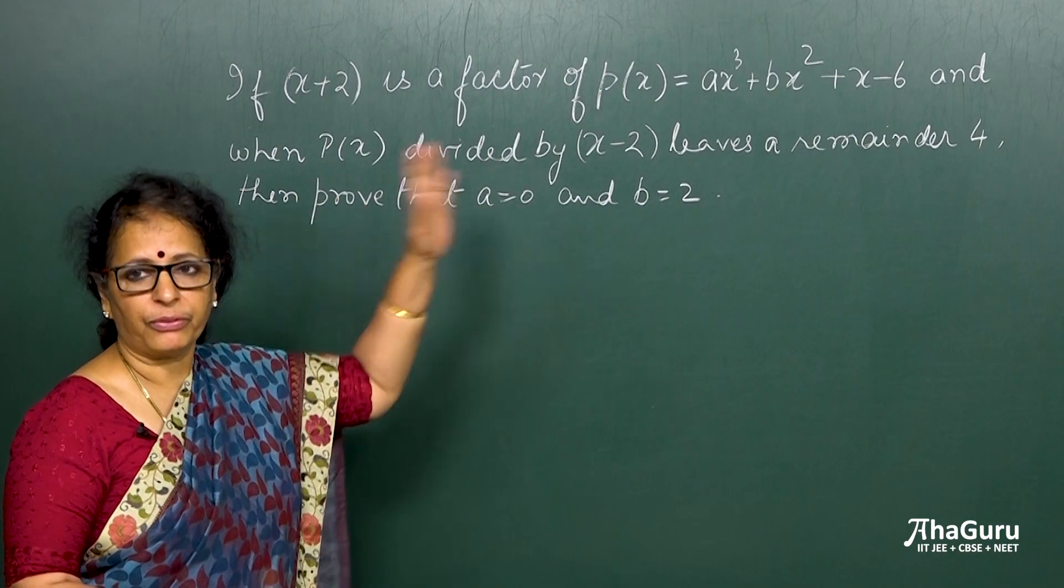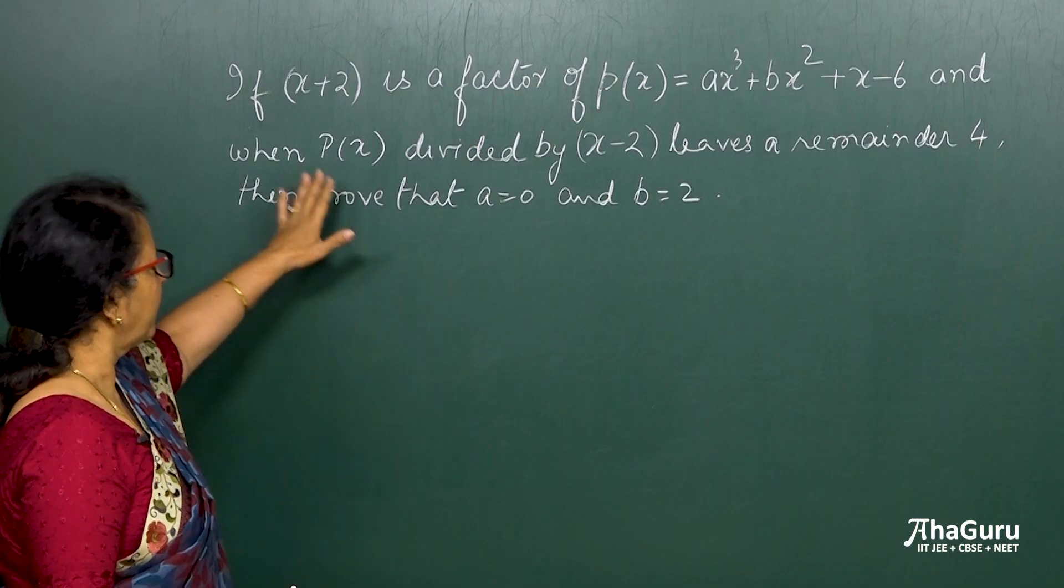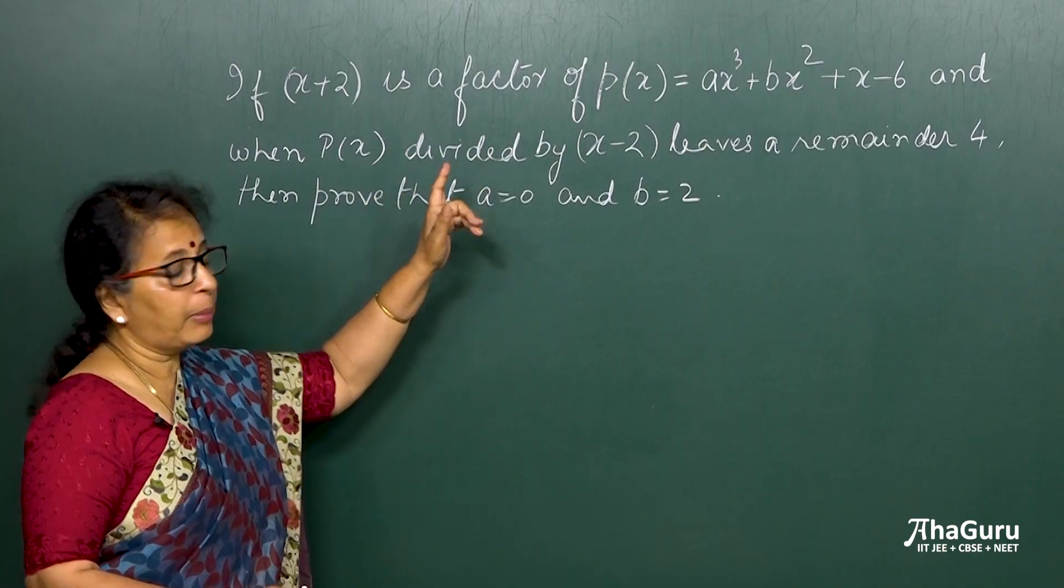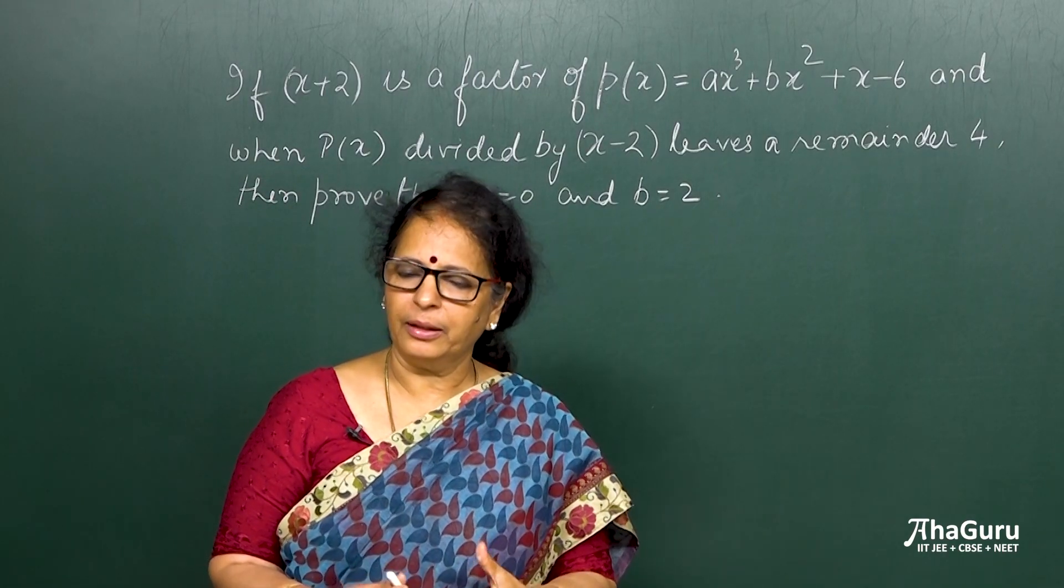So x plus 2 is a factor, that is what is given, and when the same polynomial P(x) is divided by x minus 2, then it leaves a remainder 4. What does that mean?